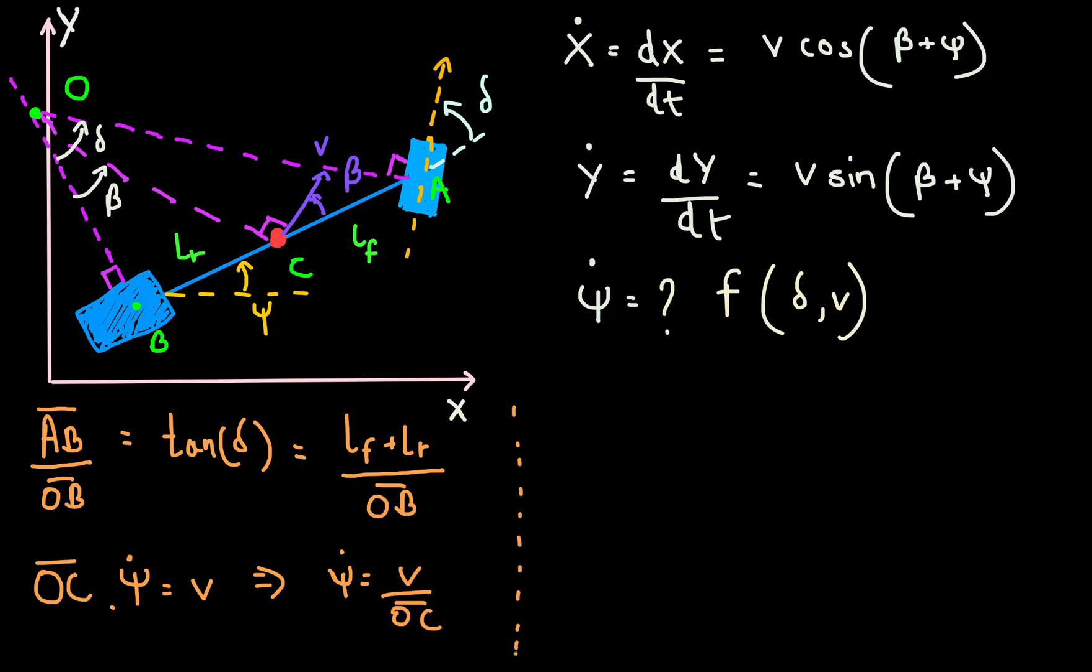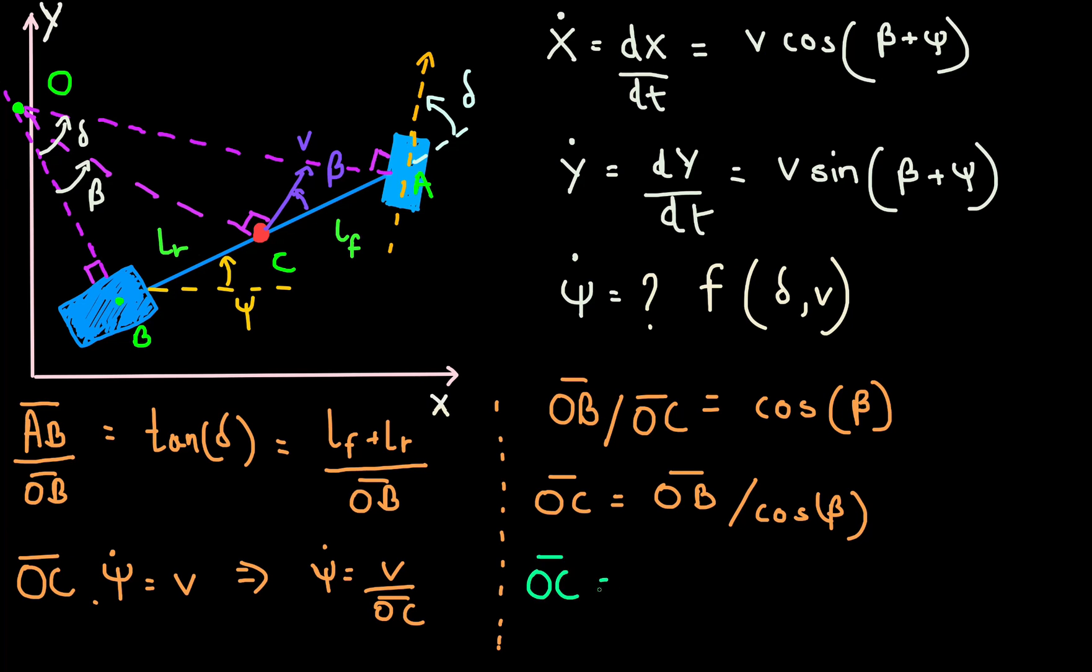Looks like we're making some progress now. We now have psi dot expressed in terms of v and OC, but we still have to eliminate OC somehow. Let's look at the triangle OBC. Angle at the vertex O for triangle OBC is beta. Again, we know this from high school geometry. So OC is then OB divided by cosine of beta. We already know what OB is. It's LF plus LR by tan delta. And when we plug all of that in, we get OC expressed as a function of LF, LR, delta and beta.